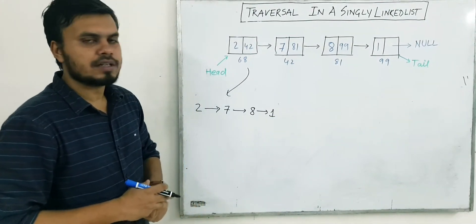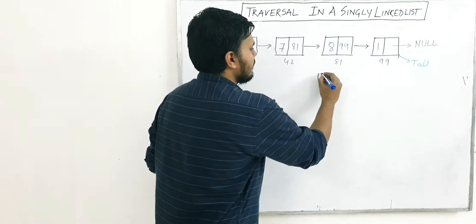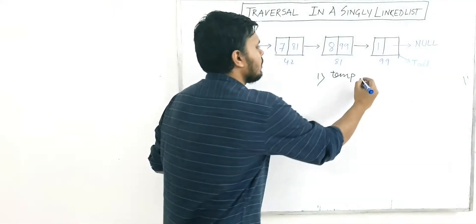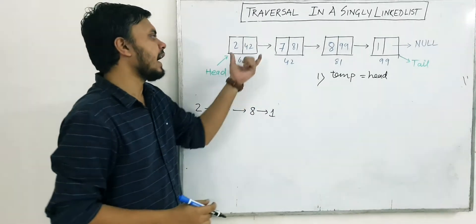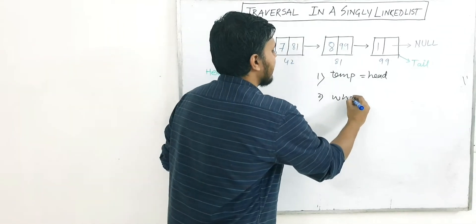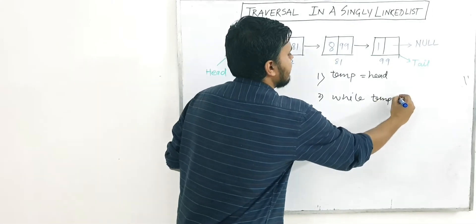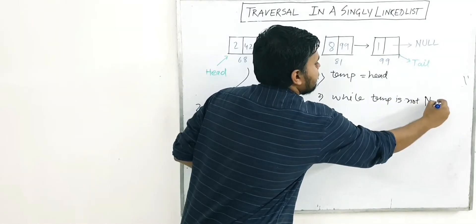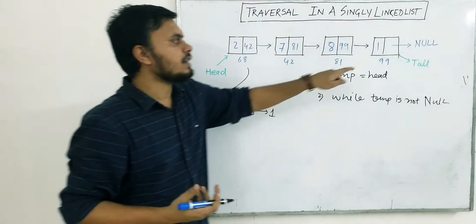We need to come up with a solution to traverse these nodes with some code. We'll implement a very simple algorithm. We'll start by taking a temporary variable called temp, which will initially be equal to the head pointer — the head node. Then we'll write a loop that runs while the value of temp is not null.